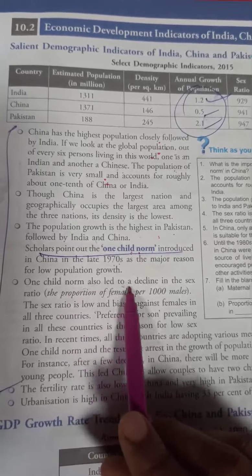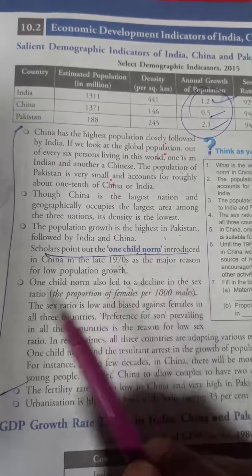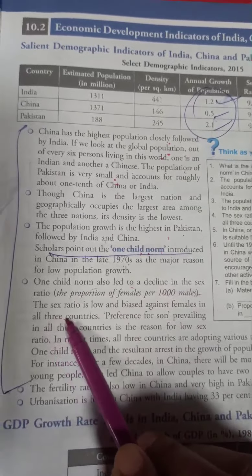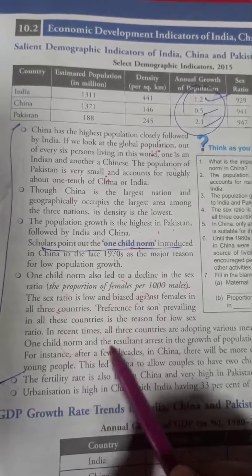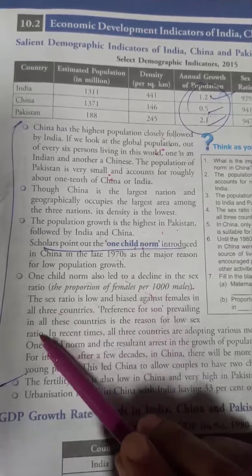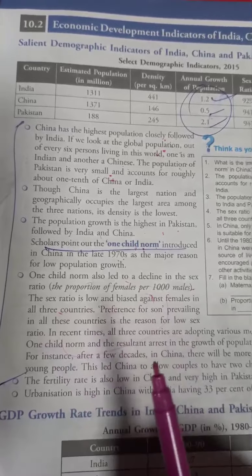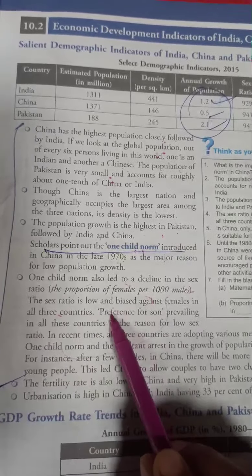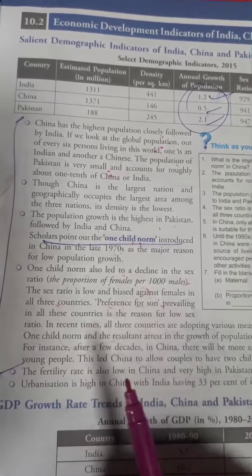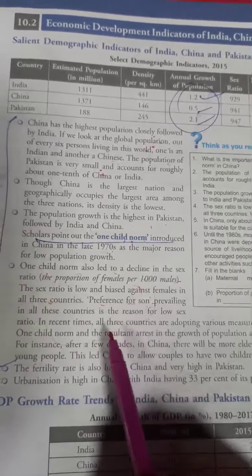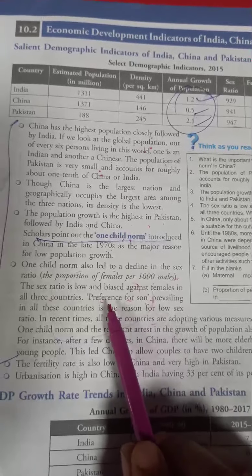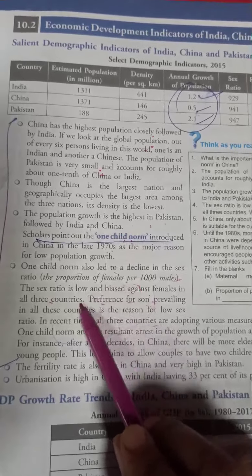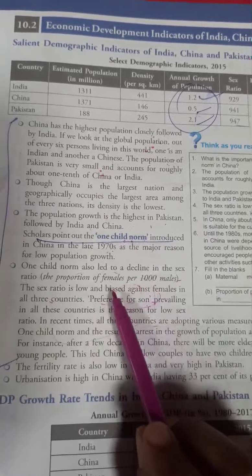Due to the one-child norm policy, there was a decline in the sex ratio. The sex ratio across all three countries is still comparatively low. The reason is the preference for sons in all three countries.